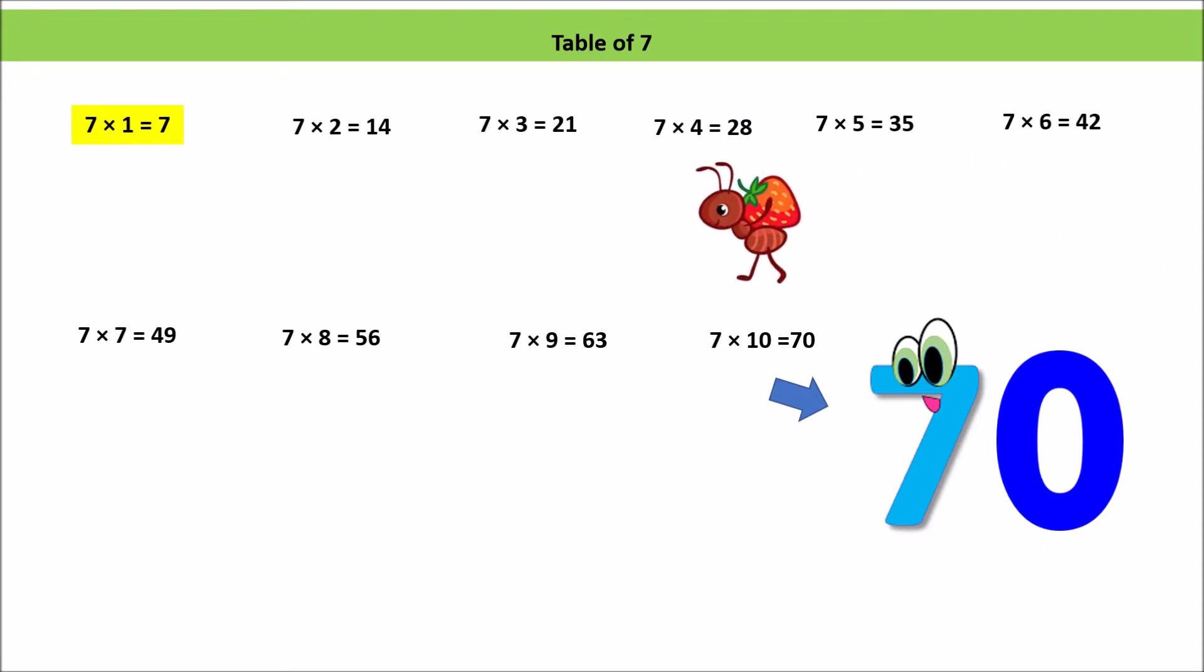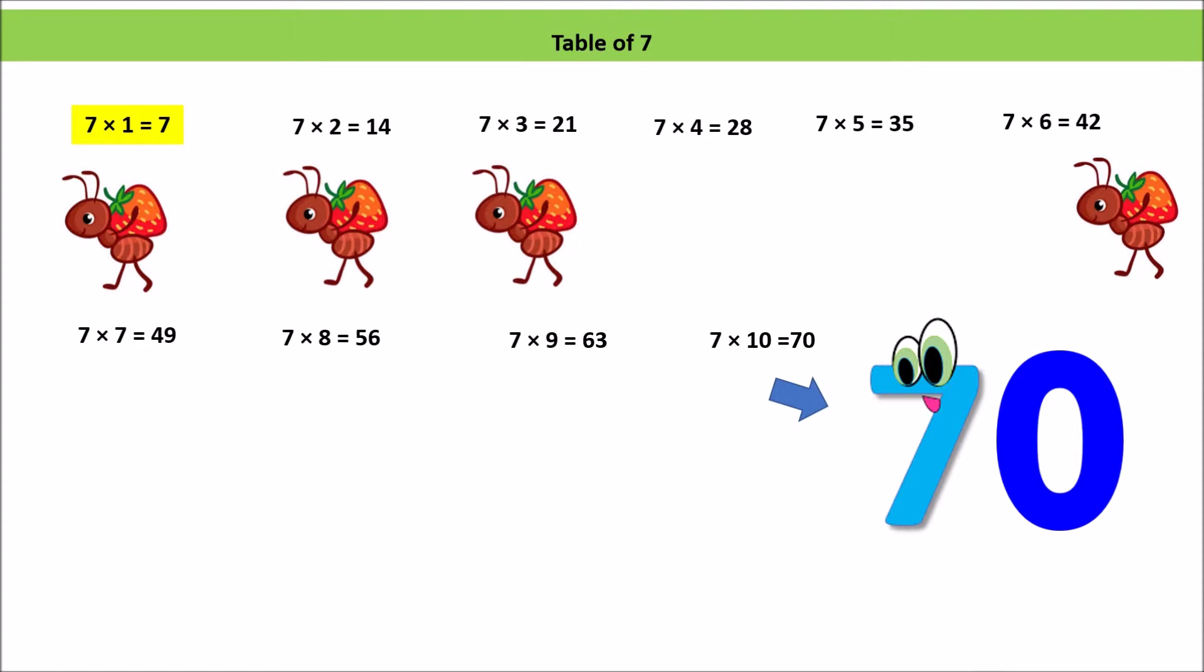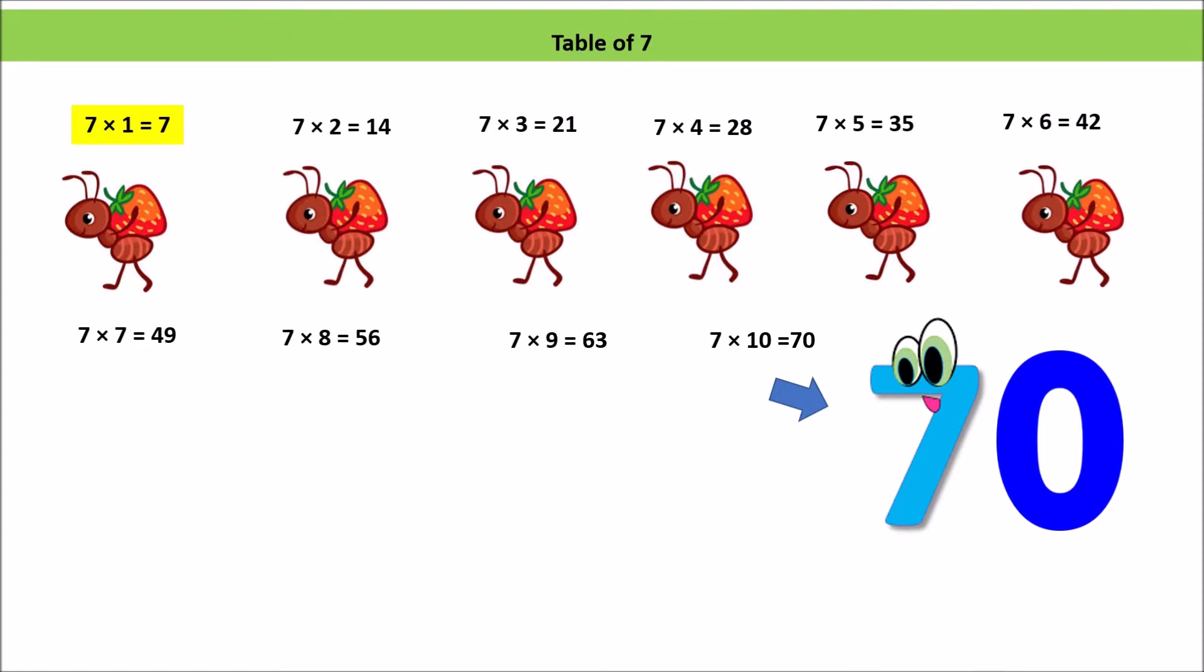7 1s are 7, 7 2s are 14, 7 3s are 21, 7 4s are 28, 7 5s are 35, 7 6s are 42, 7 7s are 49, 7 8s are 56, 7 9s are 63, 7 10s are 70.